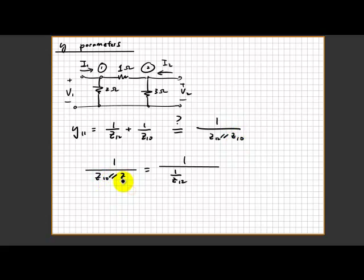By going through this way, 1 over z10, you have to inverse that, right? Because the relationship between admittance and impedance is actually y equals 1 over z or z equals 1 over y.